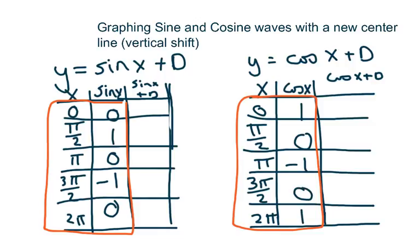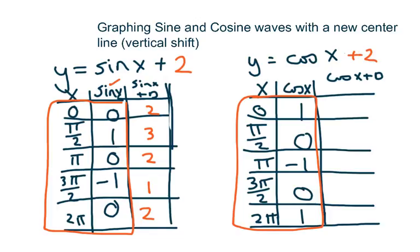So if we're going to shift up the graph by 2, I'm going to change this to a 2 — then all you're doing is adding 2 to each value. For sine that would be: 2, 3, 2, 1, 2. And if you shift cosine up by 2 as well, that would be: 3, 2, 1, 2, 3.